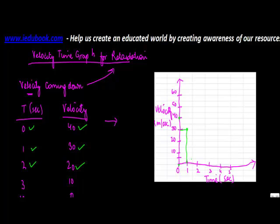Then time is 2, velocity 20. Time 3, velocity 10. At time 4, velocity is 0, so 0 is itself here only. So you draw this line, it's a right downward sloping curve.